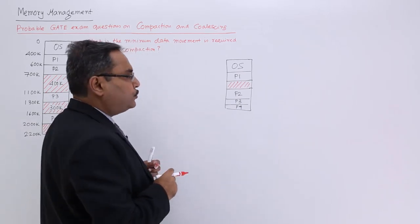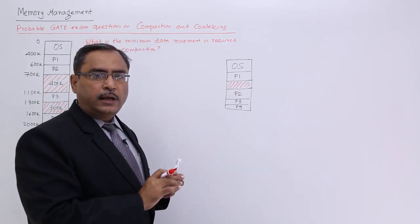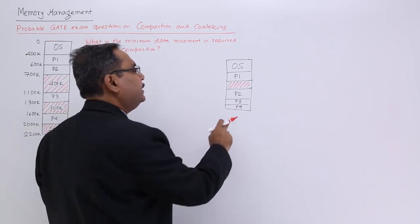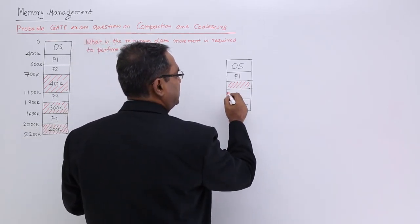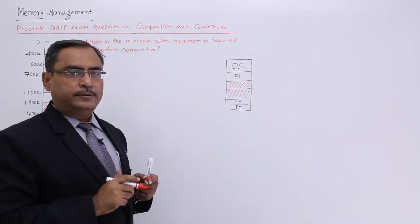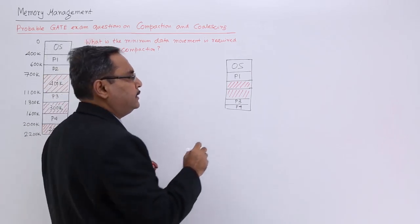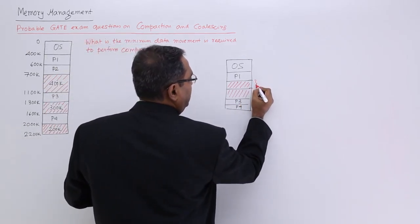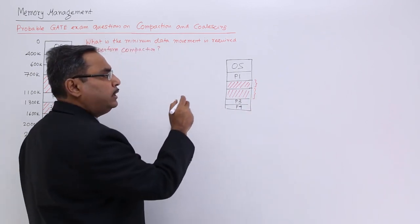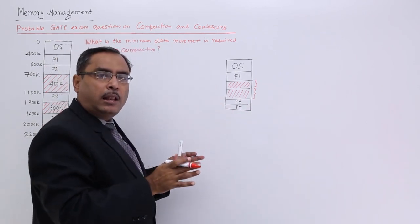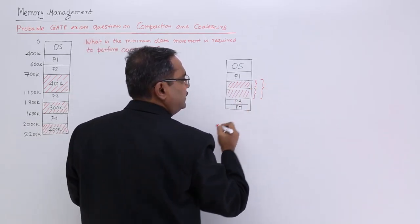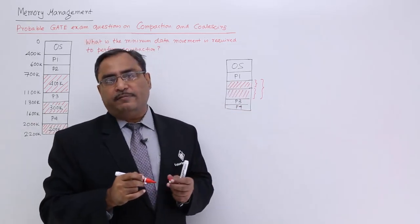Now, let us suppose this P2 has been terminated, its processing has been done, so it is now releasing its space. After releasing the space, so this free space will be also obtained. Coalescing means, without coalescing, I shall tell that this is one free memory hole and there is another free memory hole.